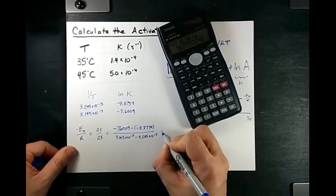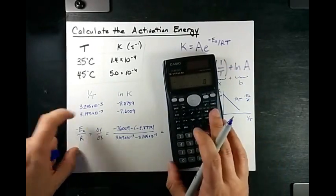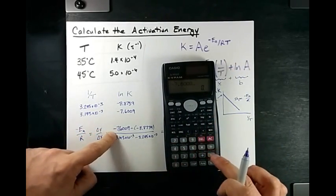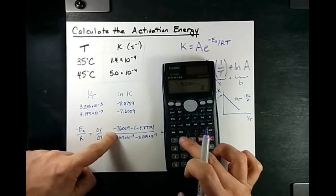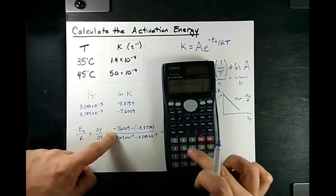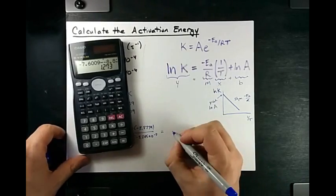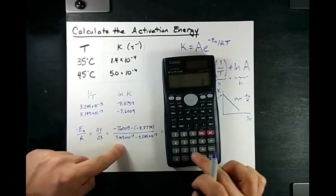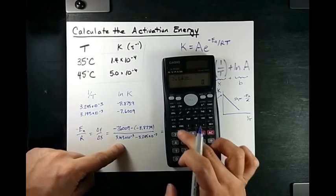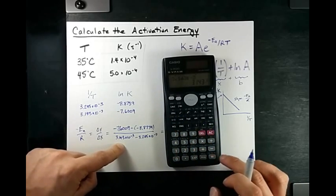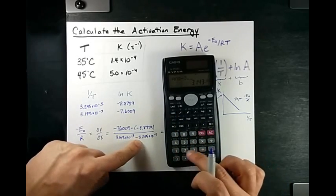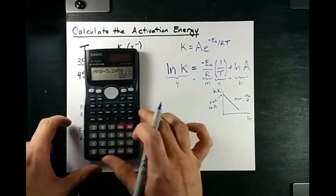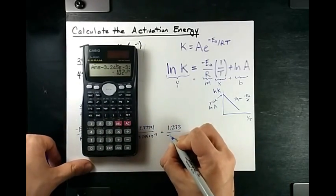Negative 7.6009 minus negative 8.8739 gives me 1.273 on top. And 3.143 times 10 to the negative 3 minus 3.245 times 10 to the negative 3 gives me negative 1.02 times 10 to the negative 4.